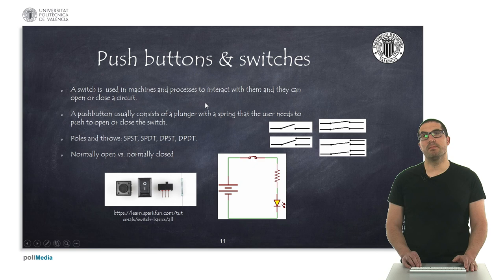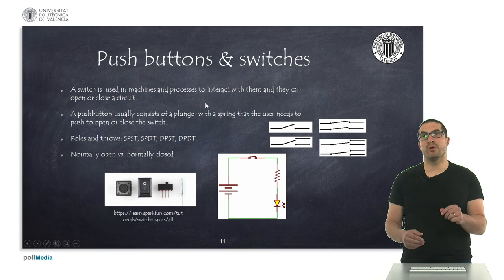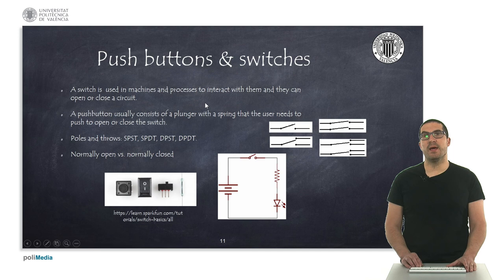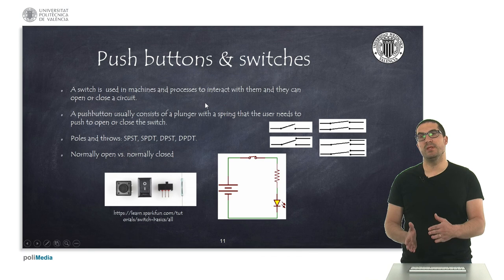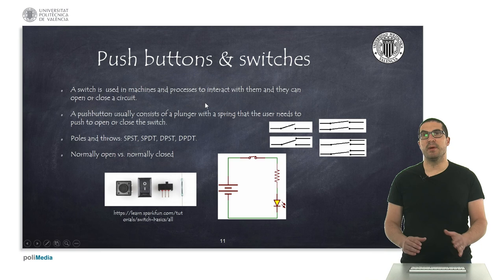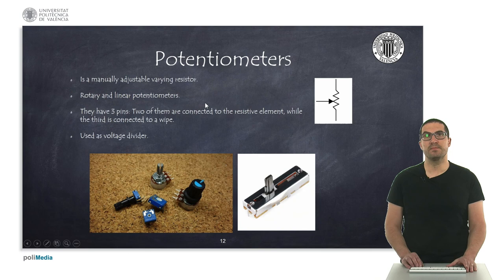Push buttons and switches are used in many kinds of devices and machines — we use them to interact with, where the user pushes or switches specific plungers to open or close a specific circuit. There are different kinds of push buttons or switches depending on the number of poles (the number of inputs) and the number of throws (the number of outputs or circuits they can switch). We can also find terminals labeled NO or NC, which correspond to normally open or normally closed.